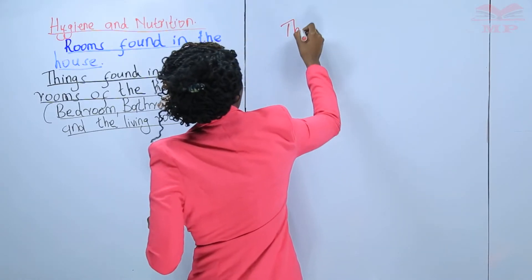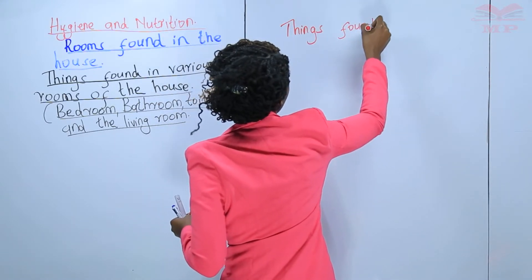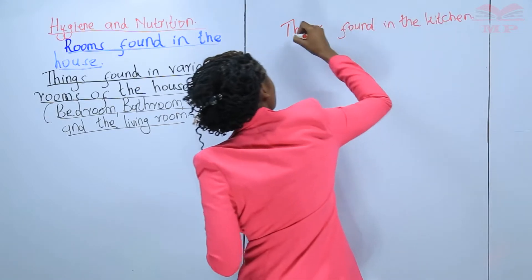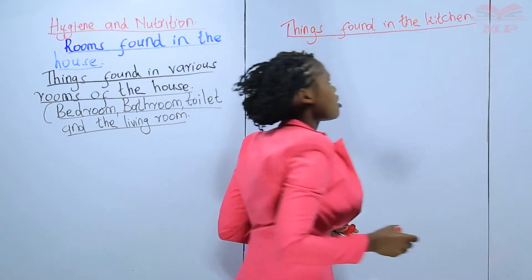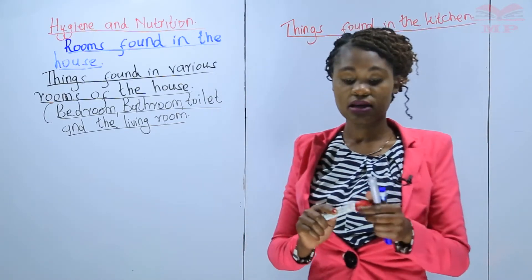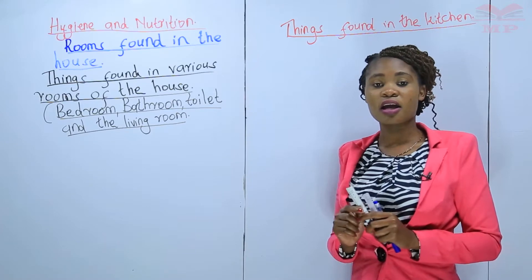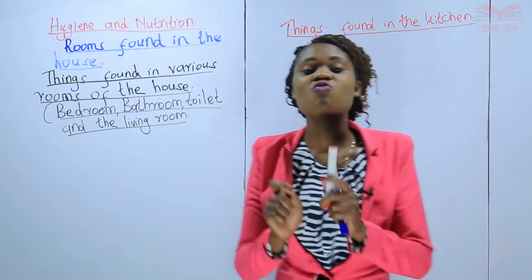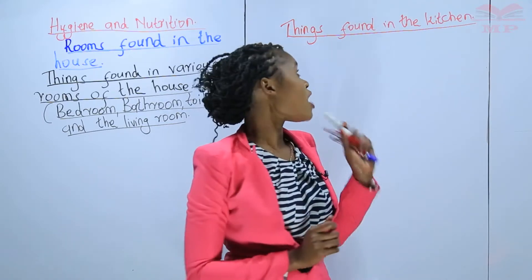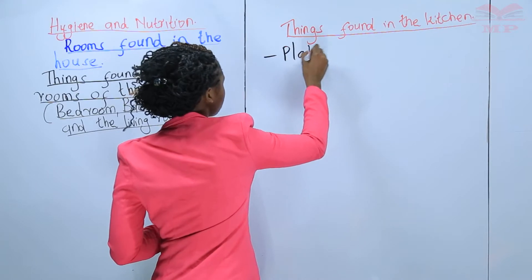Let's start with the things found in the kitchen. A kitchen is a place where we cook our food or prepare our meals. What are some of the things found in the kitchen? Most things found in the kitchen are utensils — utensils are things that we use to cook and serve food. What are some of these utensils? We have plates; we use plates to serve food.